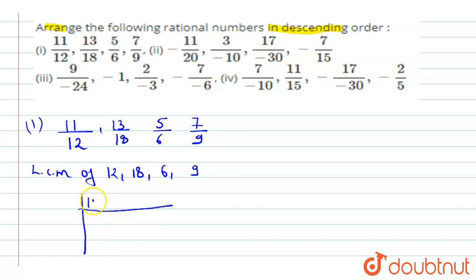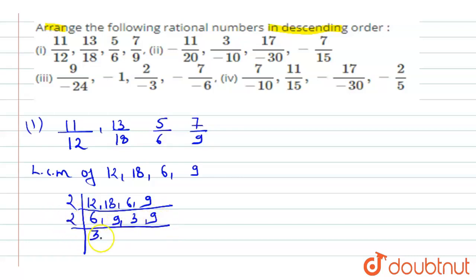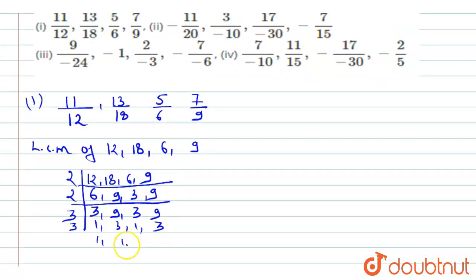To find the LCM, we factor 12, 18, 6, and 9. Dividing by 2: we get 6, 9, 3, 9. Dividing by 2 again: 3, 9, and so on. Then dividing by 3 repeatedly until we reach 1, 1, 1, 1. So the LCM is 2 × 2 × 3 × 3 = 36.